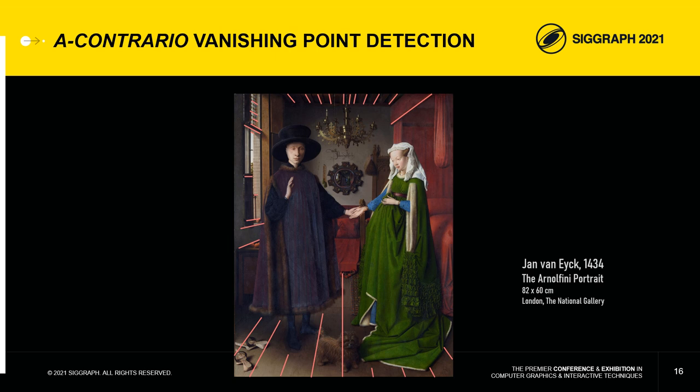A painting certainly does not present the same characteristics as photographs of urban scenes. Few edges are often exploitable, and their position may be imprecise due to their delineation by the scholar or their representation by the painter.